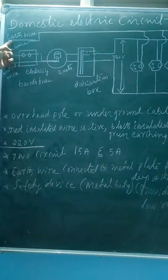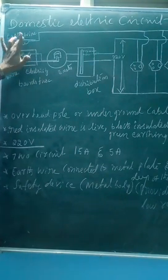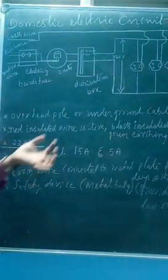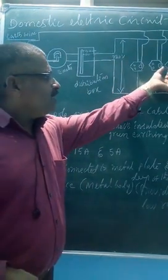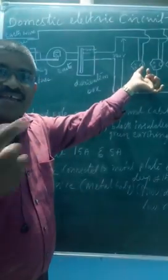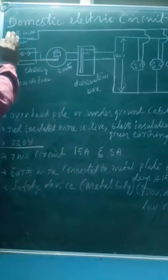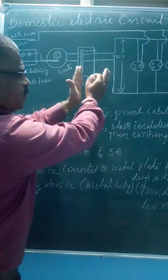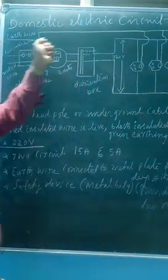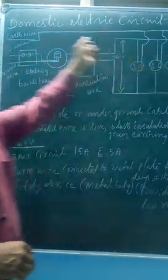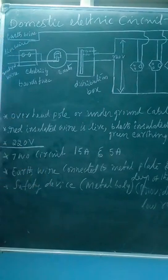The earthing wire is directly connected to the earth — not to the meter box or fuse or distribution box. It just runs in our house and is connected to the bigger hole of the socket, and is kept deep in the earth. This is a very important wire.